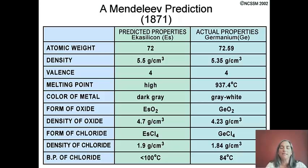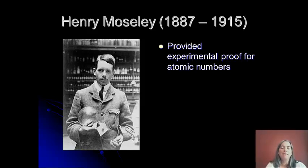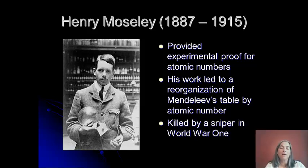That's just an example — nobody's going to quiz you on that — but I wanted to show you why he gets credit. Another person instrumental in the modern periodic table was Henry Moseley. He developed experimental proof for the atomic numbers — that number at the top of the block. His work led to a reorganization of Mendeleev's table from atomic mass to atomic number. Unfortunately, he was killed by a sniper in World War I, having only lived about 28 years, so there was a lot of promise in him that was never realized.